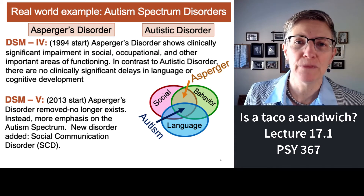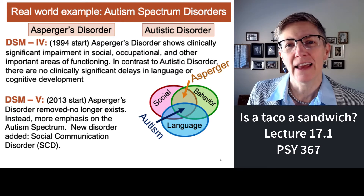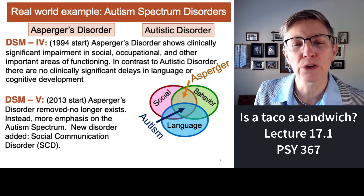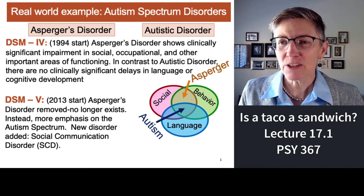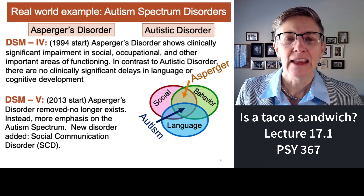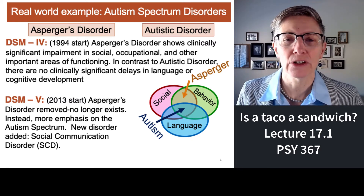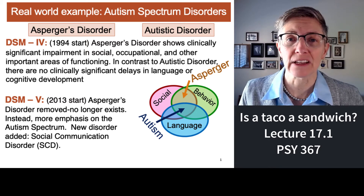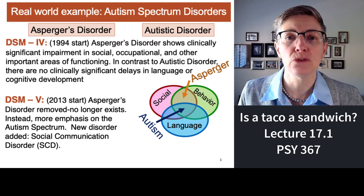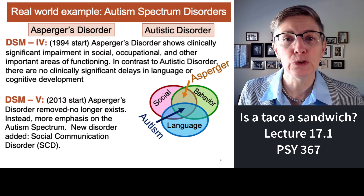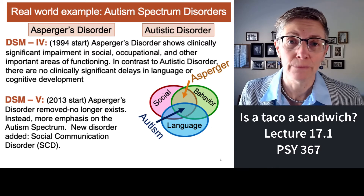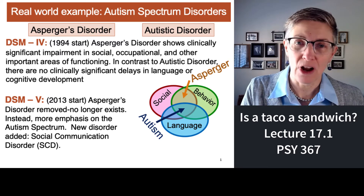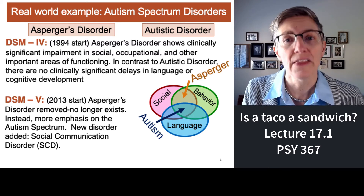Let me give you another example. This comes from the DSM, the Diagnostic and Statistical Manual, that is used to diagnose every mental illness that exists. In 1994 when we were using DSM-4, there was a disorder called Asperger's, which involved significant impairment in social and occupational behavior but no significant disruption of language or other cognitive abilities. Psychologists and psychiatrists found they were struggling to use that category consistently. So when we moved to DSM-5 in 2013, Asperger's was gone — a category that no longer existed. Did people who had social issues but no cognitive or language issues disappear? No. They were still there; they were just categorized in another way.